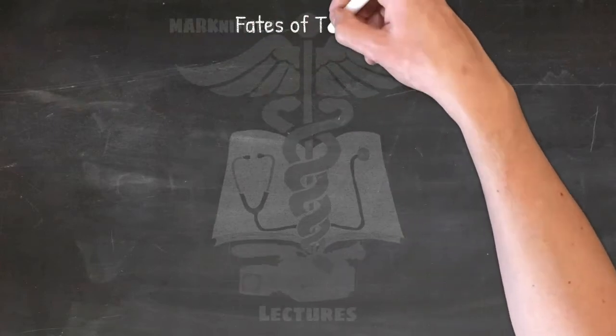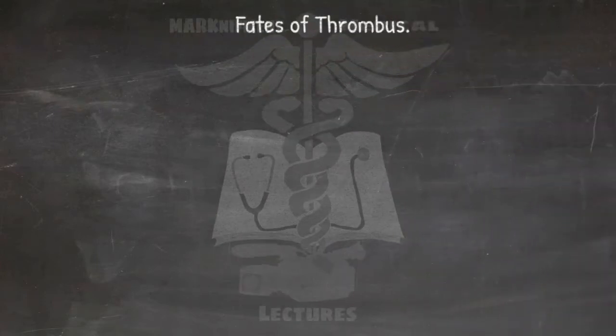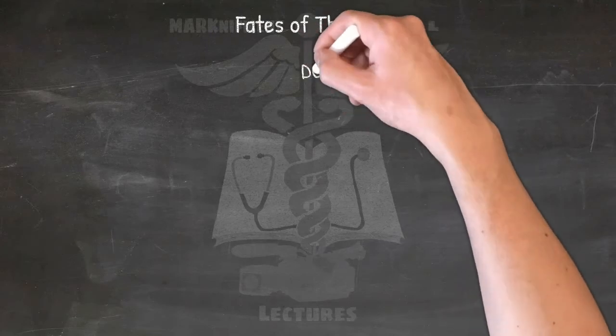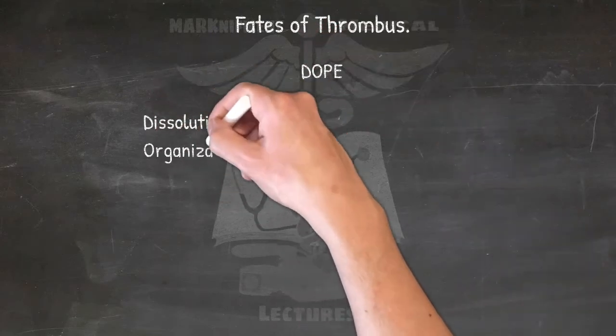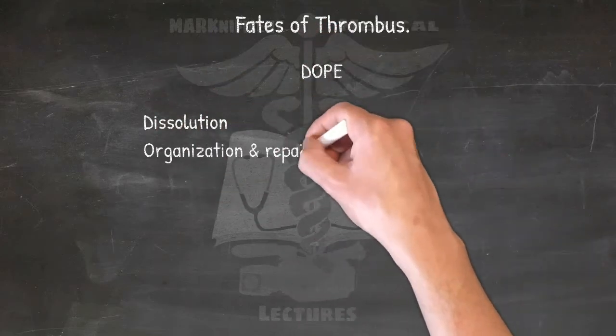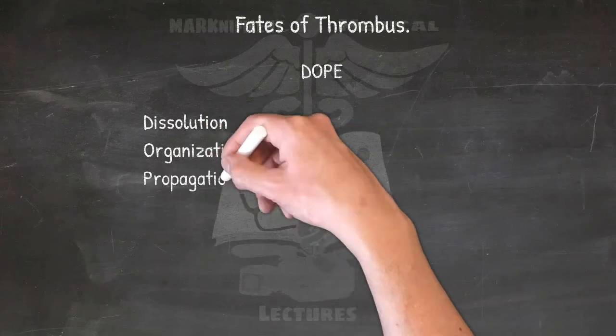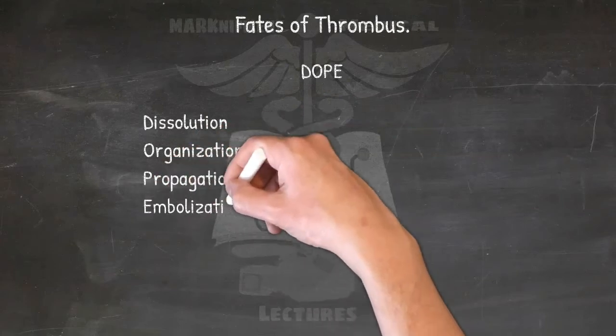Possible fates of thrombus: DOPE — Dissolution, Organization and repair, Propagation, and Embolization.